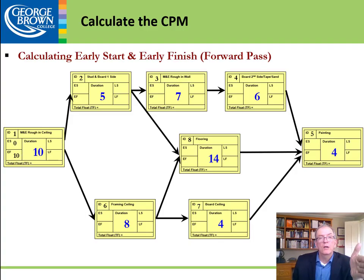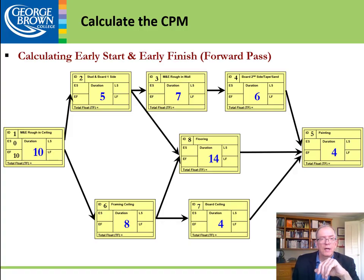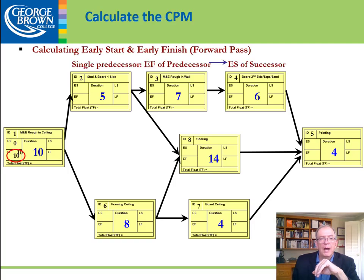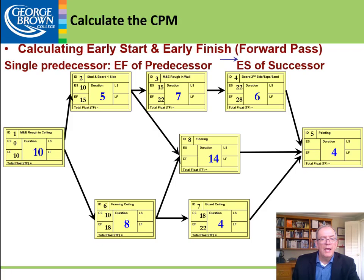We're working on the forward pass — remember we have to do both the forward pass and the backward pass. Assuming you've reviewed chapter 3, on the forward pass the 10 becomes the early start for stud and board one side. We add the duration of 5 days, so 10 plus 5 is 15, and 10 plus 8 is 18, giving us those early finish values.